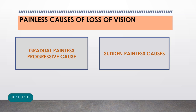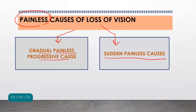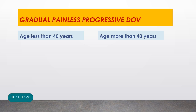Now let us see the causes of vision loss that are painless — not associated with any pain. Based on progression, we can classify them as gradual painless progressive causes and sudden painless causes. We will first discuss gradual painless progressive causes, divided into age less than 40 years and age more than 40 years.